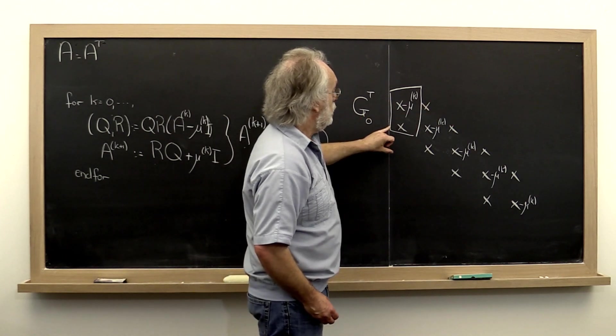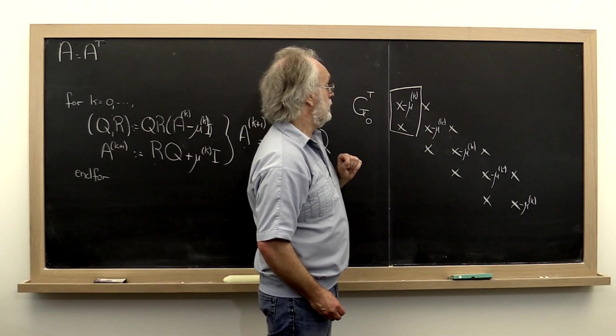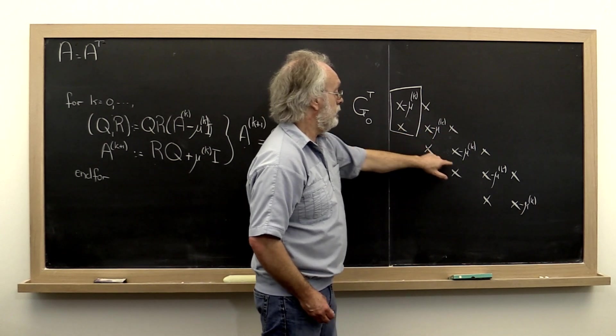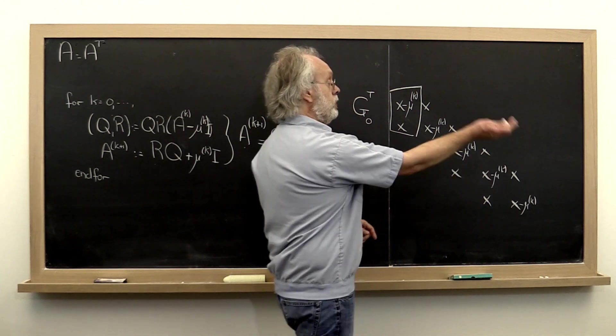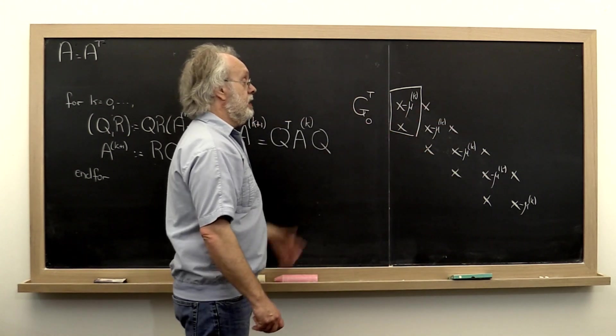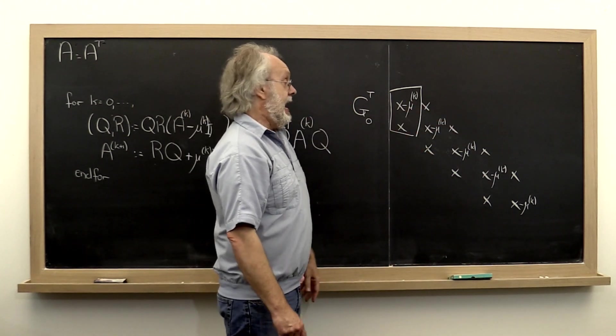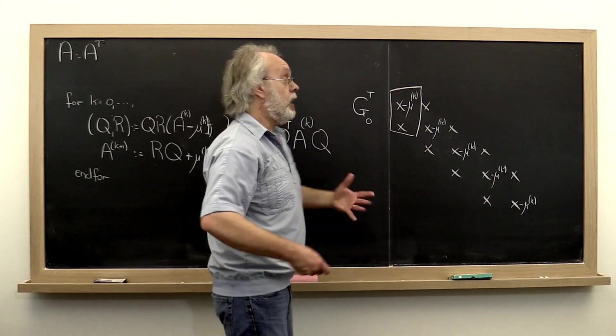Then we would compute another Givens rotation to put a zero here, and eventually we would apply them from the right. And then we would add our shift back in.